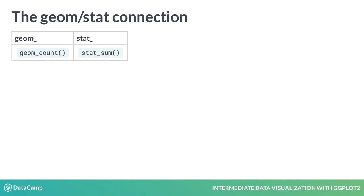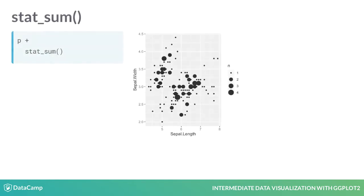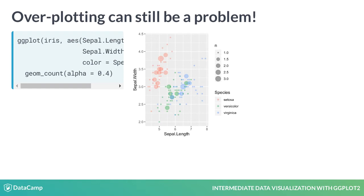Remember that these geomes are associated with stats functions that can also be called directly, as shown here — calling the stats function gives the exact same plot. We'll see this trick used with integer data in the exercises, which is a very common use. But be careful: you'll still encounter overplotting if the points are colored according to another variable, which makes it particularly difficult to read the plot.